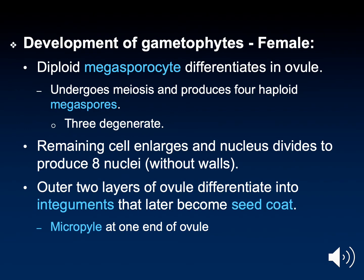Let's discuss the formation of male and female gametes — these processes take place before pollination and fertilization. Regarding the female gamete, a structure known as the megasporocyte, a diploid structure, undergoes meiosis, producing four haploid megaspores. Three of those will degenerate and one will remain. In that one remaining megaspore, the nucleus will undergo a replication event, and this will repeat two more times until there are eight nuclei inside the megaspore.